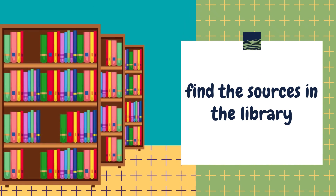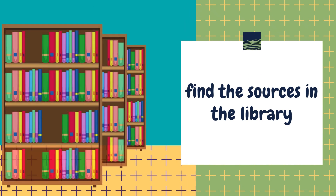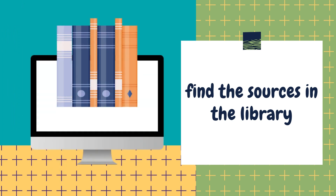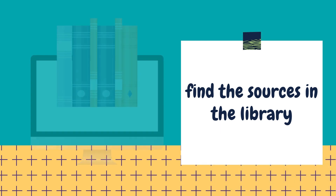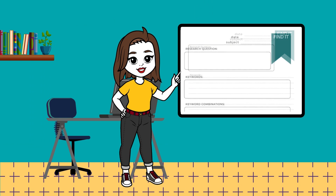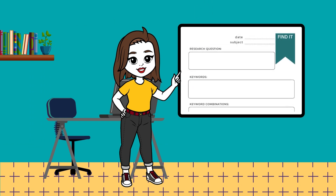Step 4: Locate the resources in the Library. For physical resources, the Catalog will list a shelf mark location for you to find the source. For digital resources, there will be instructions in the Catalog record to follow to access the source.